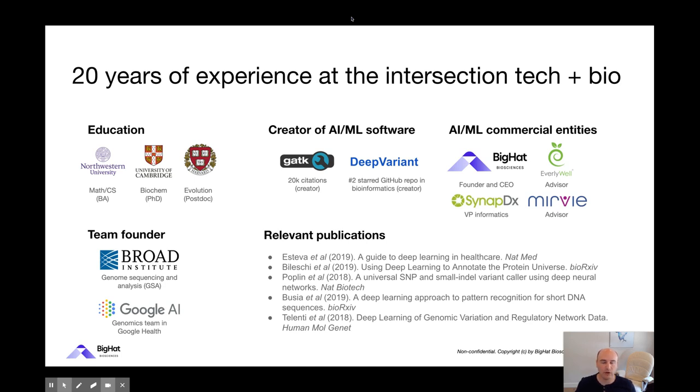I moved to a small startup called Synaptics looking for biomarkers of autism in the blood, which ultimately led me to Google and the Google Brain team where I founded and ran the genomics team in what's now known as Google AI. Among other things, we created a tool called Deep Variant, which is an open source suite of software for analyzing next-gen sequencing that learns how to do that task using deep learning. I have a variety of relevant publications in this area, some subset are listed here below.